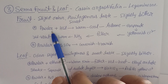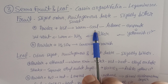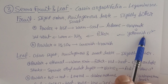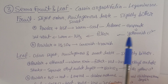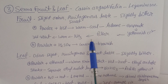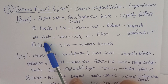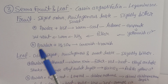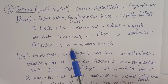First chemical test for Senna fruit: take the fruit powder, add hydrochloric acid, warm it, cool it, then add toluene and evaporate — a yellowish color will be observed. Filter it, and to that filtrate add ammonia and warm — a red-violet color will appear, confirming Senna fruit. Second test: add sulfuric acid (H₂SO₄) to the fruit powder — a greenish to brownish color will be observed.